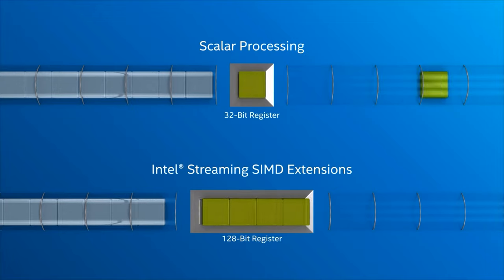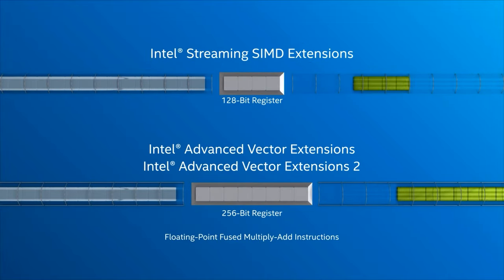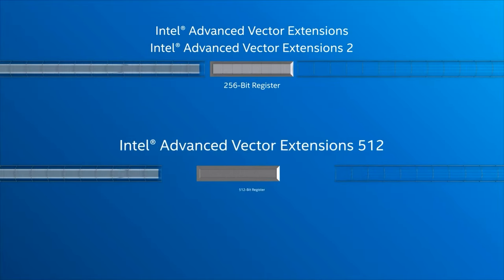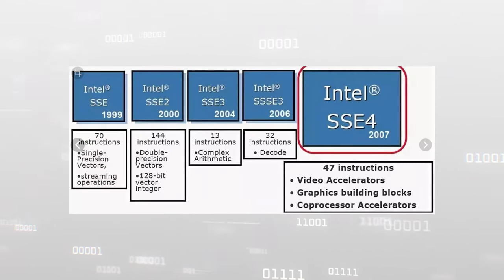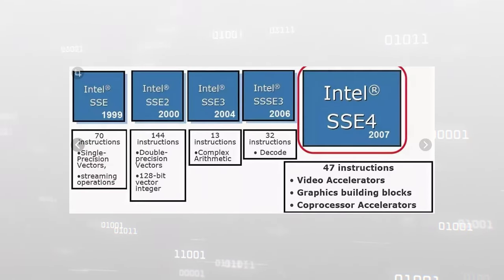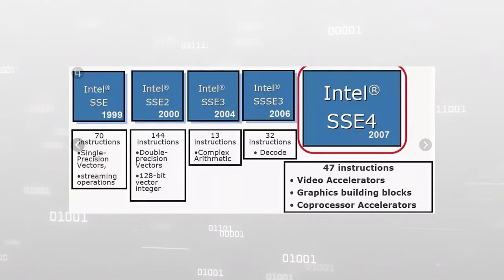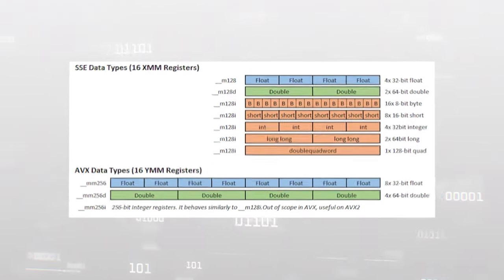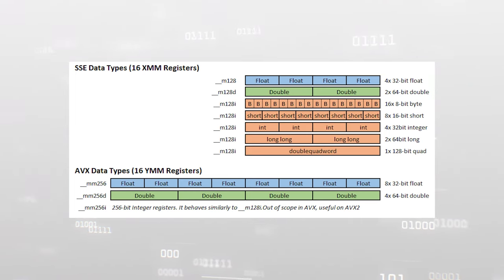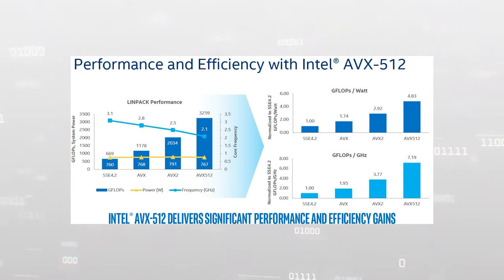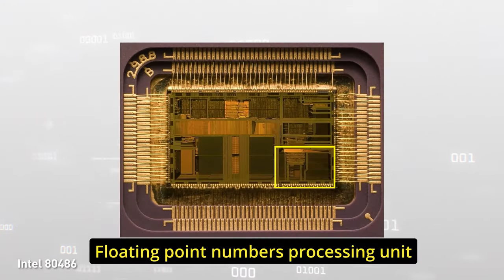Later, more advanced and at the same time simpler instructions for programmers appeared, such as SSE and AVX. The former was a logical continuation of MMX, which was now connected to a coprocessor and could work with floating-point numbers. The AVX instructions are a further development of SSE, which can work with a larger amount of data per clock cycle. Such additional instruction sets can load special units in processors, leading to faster solutions for certain types of tasks.